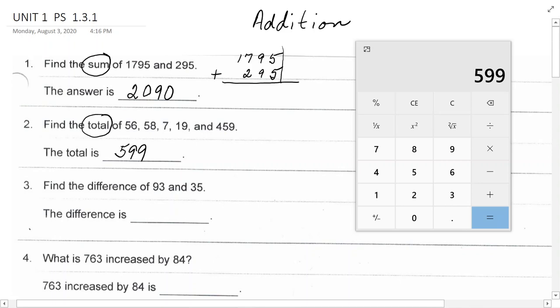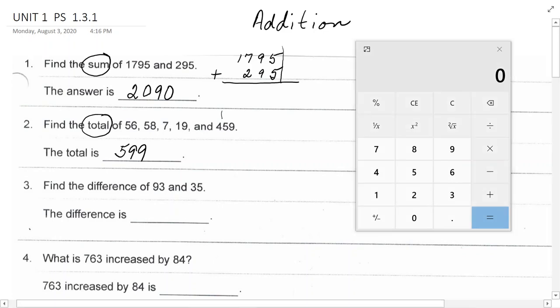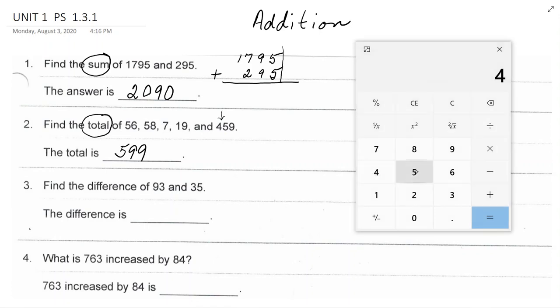Now, I recommend that you clear your calculator and add them again to double check. So, this time, I'm going to start on this end and say 459 plus 19 plus 7 plus 58 plus 56 equals. Again, I got 599, so I feel really good about it. So, now I can clear my calculator.